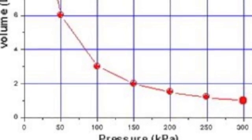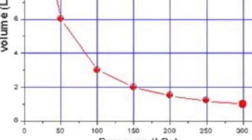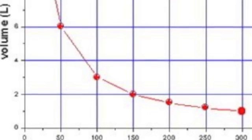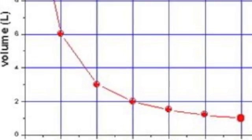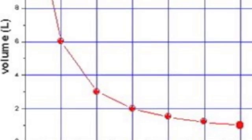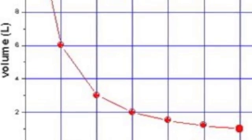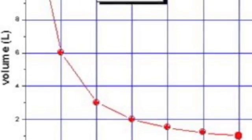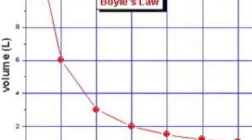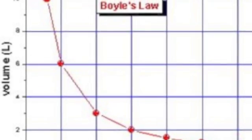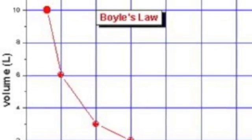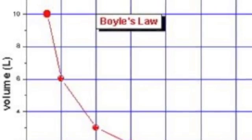One important thing to note is Boyle's Law. Boyle's Law states that the volume of a fixed mass of gas varies inversely with the pressure at constant temperature. The equation is PV equals K, where P is the pressure, V is the volume, and K is a constant. P and V vary inversely.